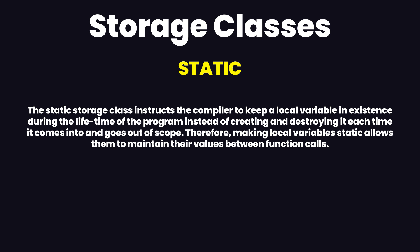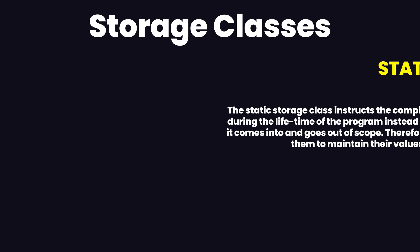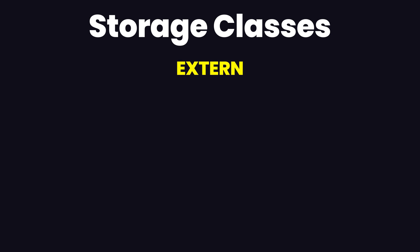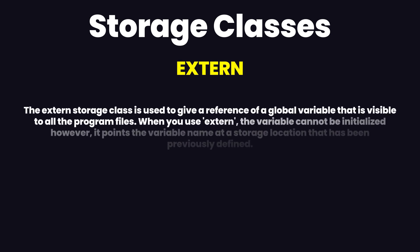Making local variables static allows them to maintain their values between function calls. The static modifier may also be applied to global variables, and when this is done it causes that variable's scope to be restricted to the file in which it is declared.